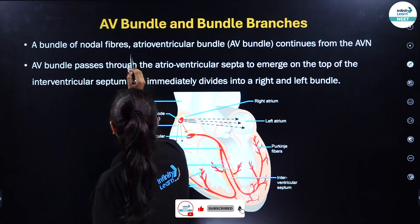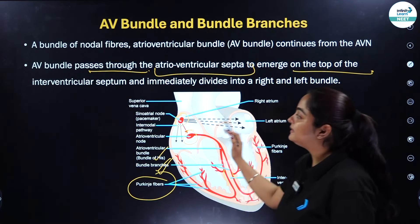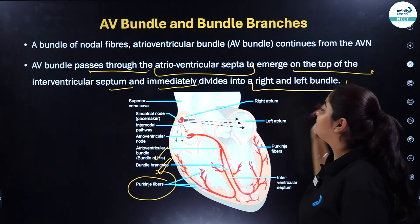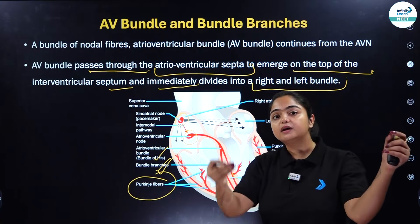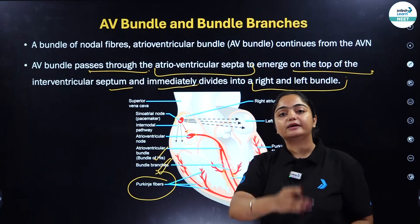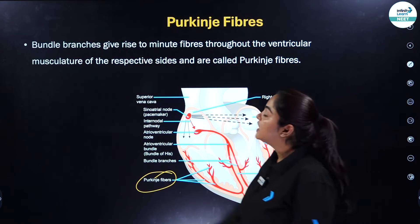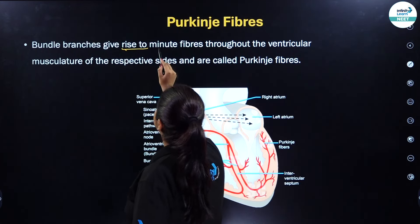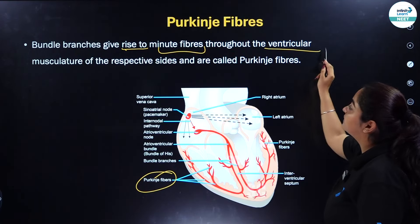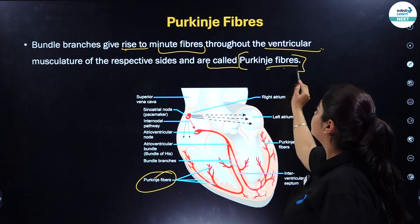The AV bundle passes through the atrioventricular septa to emerge on top of the interventricular septum and immediately divides into right and left bundles. It starts from the septum and going towards the ventricles, it bifurcates into the right and left ventricle. After that come your Purkinje fibers. The bundle branches give rise to minute fibers that distribute throughout the ventricular musculature, and hence they are known as Purkinje fibers.